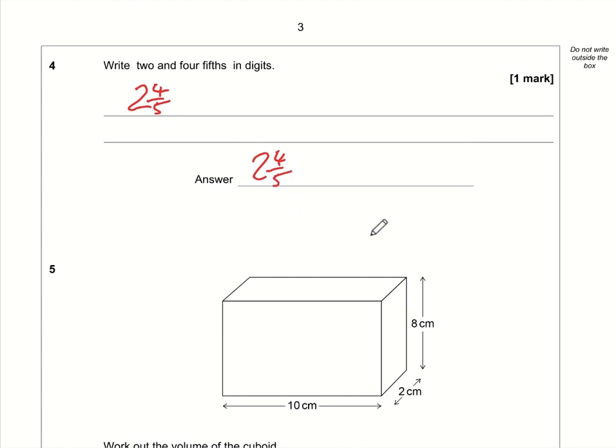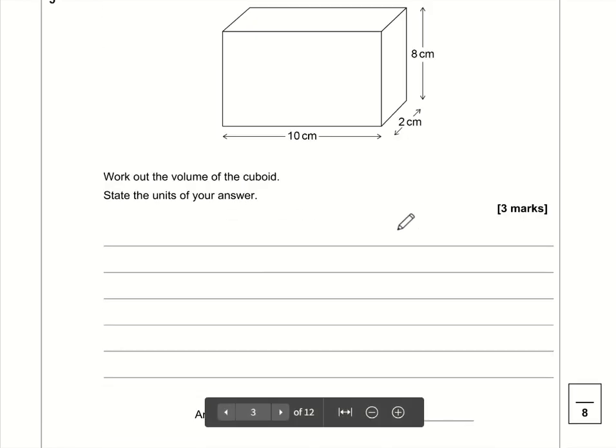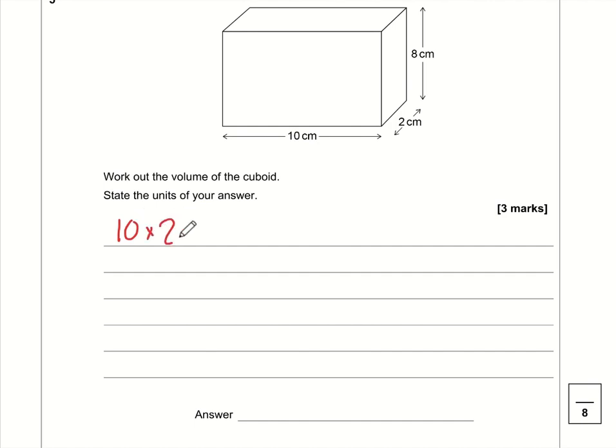Question number five: work out the volume of the cuboid. So to work out the volume, we're just multiplying these three dimensions together - that's 10 times by 2 times by 8. I'd probably keep the multiplying by 10 and hold that back till the end. We can multiply in any order, it doesn't make any difference. So 2 times 8, which is 16. 16 times 10 is 160. So the answer is 160.